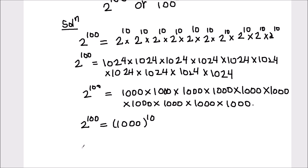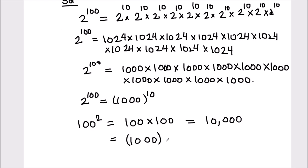Now let's take the other number, which is 100 square. 100 square can be written as 100 times 100, which equals 10,000, or we can write it as 1000 times 10.